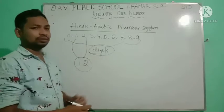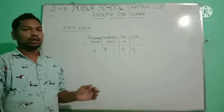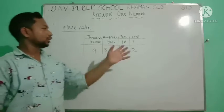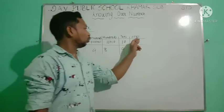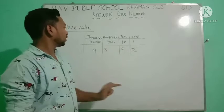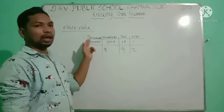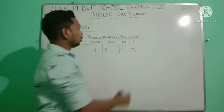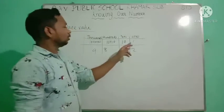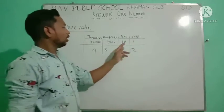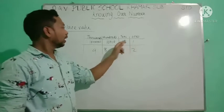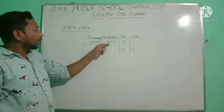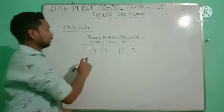In our system of numeration, there are also some place values. The first one is the ones place, then the tens place, then the hundreds place, then the thousands place, and so on. The tens place is ten times more than the ones place, the hundreds place is ten times more than the tens place, and the thousands place is ten times more than the hundreds place.